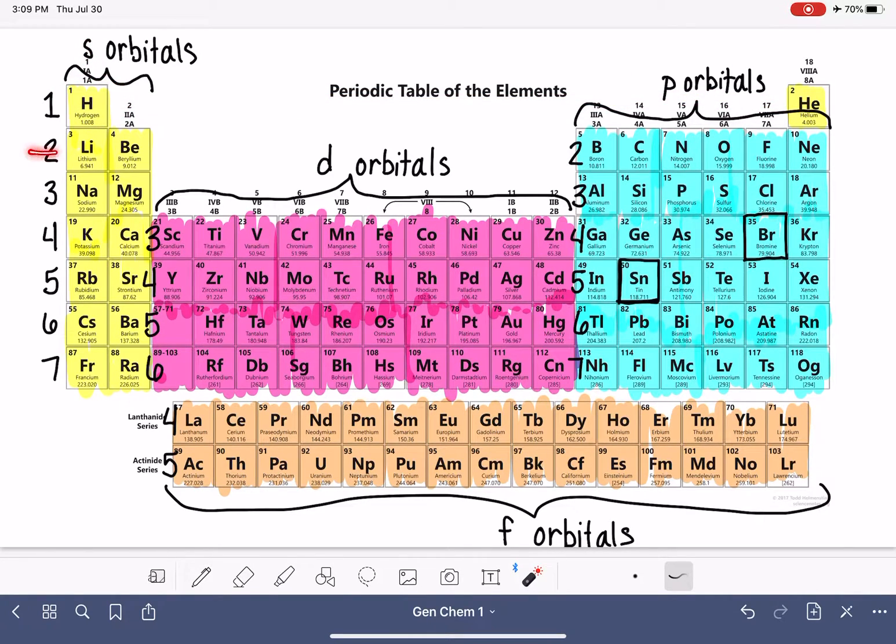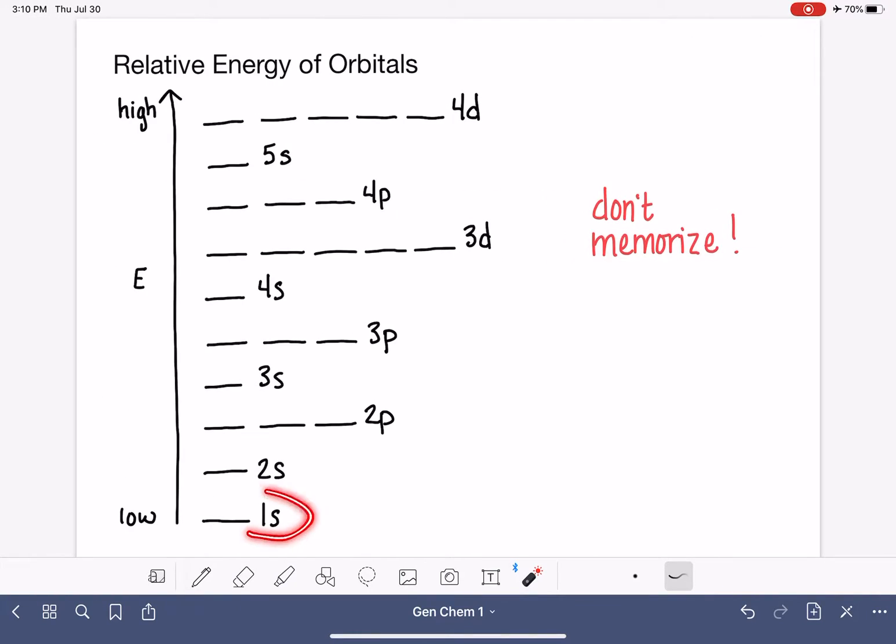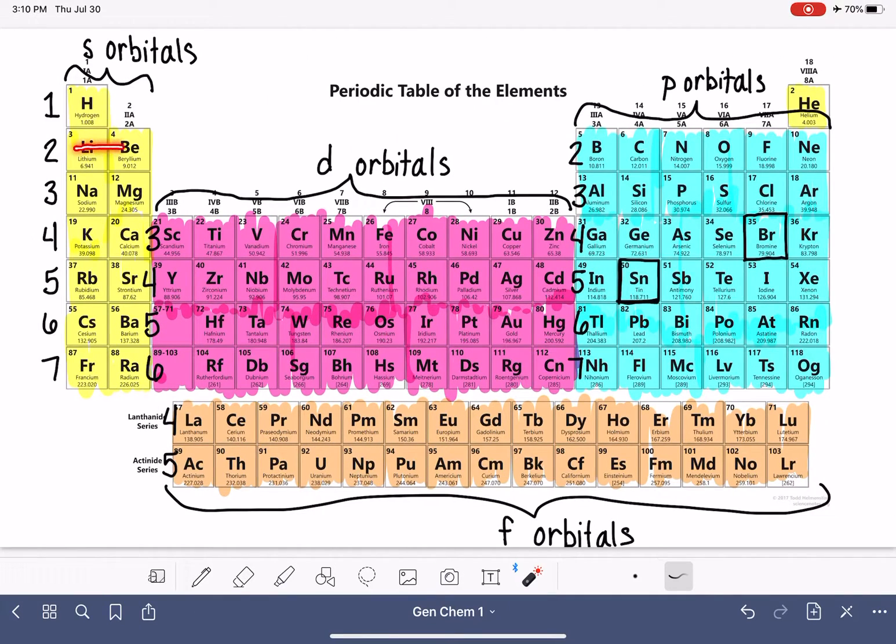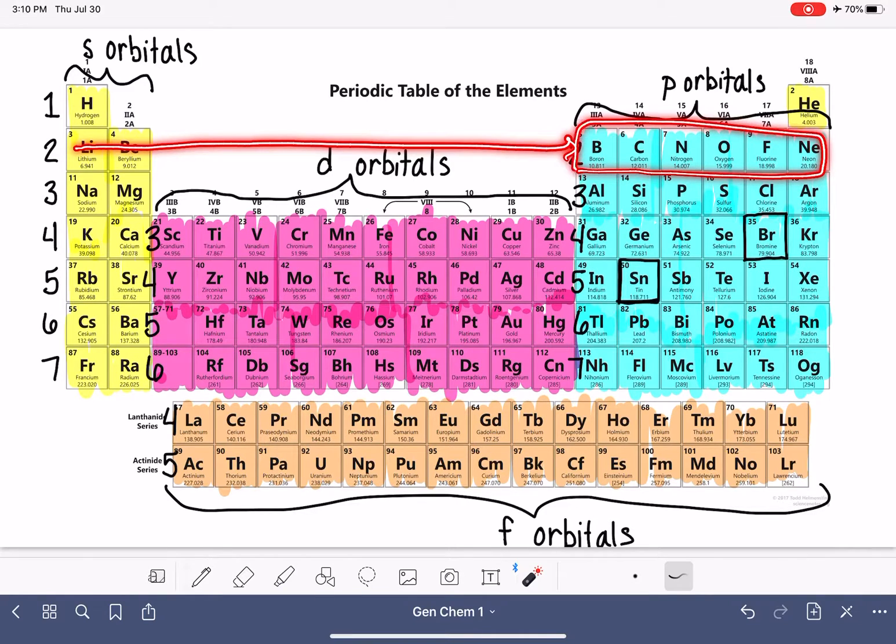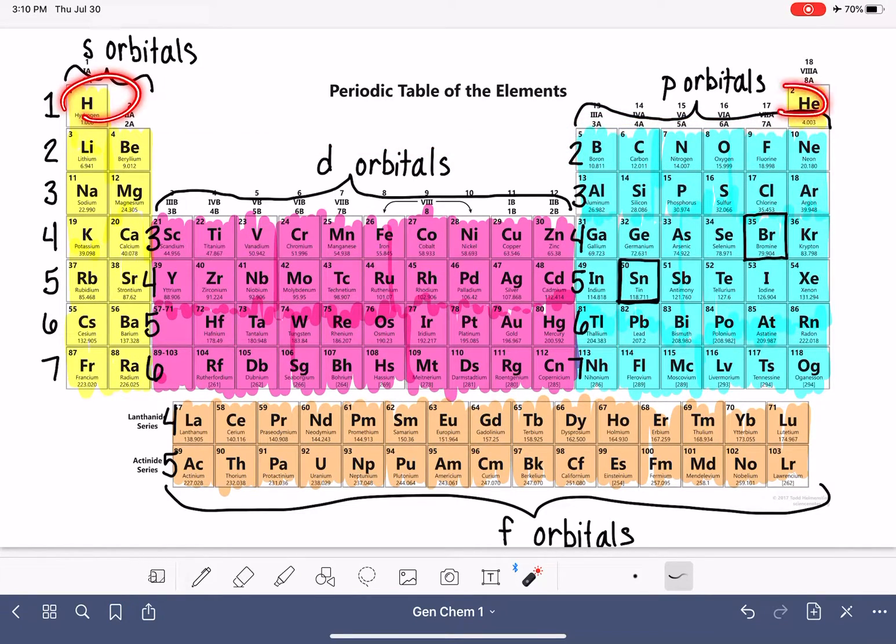And then after that, we move on down to here and these boxes represent 2s. So if you're following along, we've got 1s and now we've moved on to 2s. And after we do 2s, we go from left to right and the next is 2p. So this is the order of energy of these orbitals, starting with 1s, then moving to 2s, then moving to 2p.